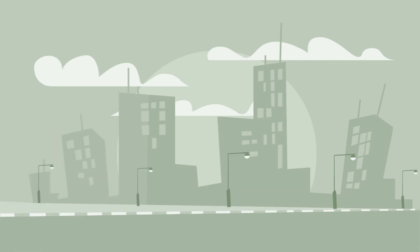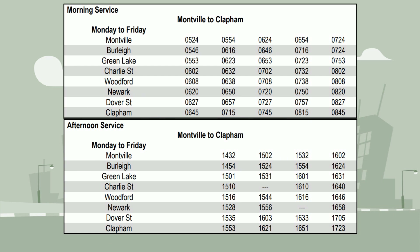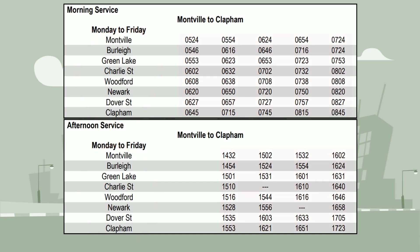Now let's look at a new timetable. It might look a little bit more confusing, but it works in the same way as the previous timetable. The title shows this train timetable is for trains running from Montville to Clapham, and here we can see all the stops the train will make on its way from Montville to Clapham. Just like the previous timetable, this shows the times the train stops at each of the stations.